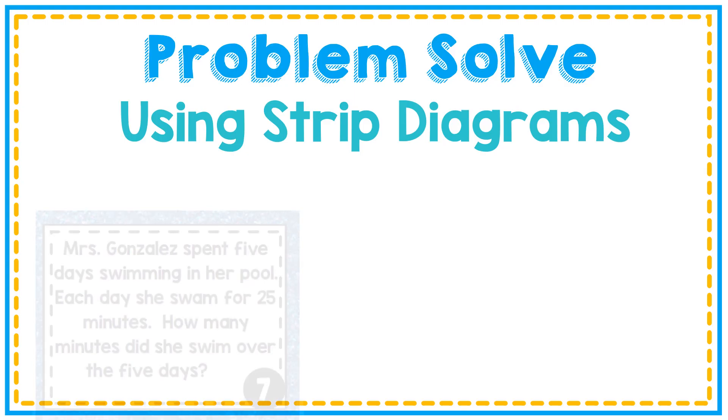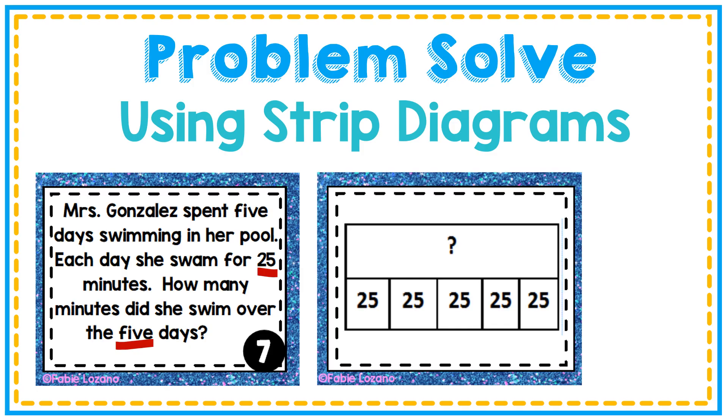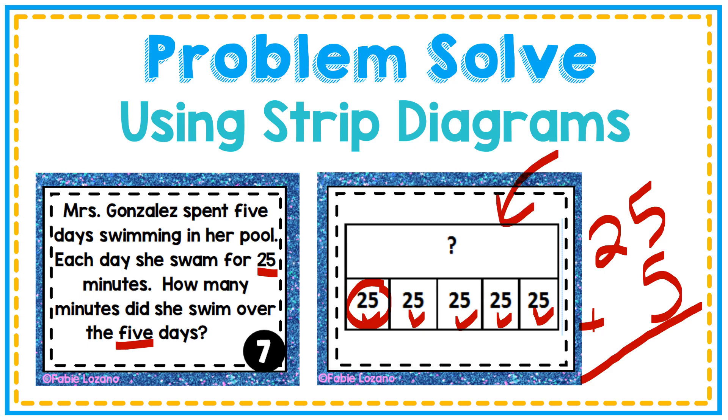Let's look at one more example. Mrs. Gonzalez spent five days swimming in her pool. Each day she swam for 25 minutes. How many minutes did she swim over the five days? Here's a strip diagram that would fit this problem. Each one of these parts represents a day, and that's five days that she swam. Each day she swam for 25 minutes. How am I going to find the whole that I'm missing? I'm going to multiply. I know that 25 times five is 125. So she swam 125 minutes over all five days.